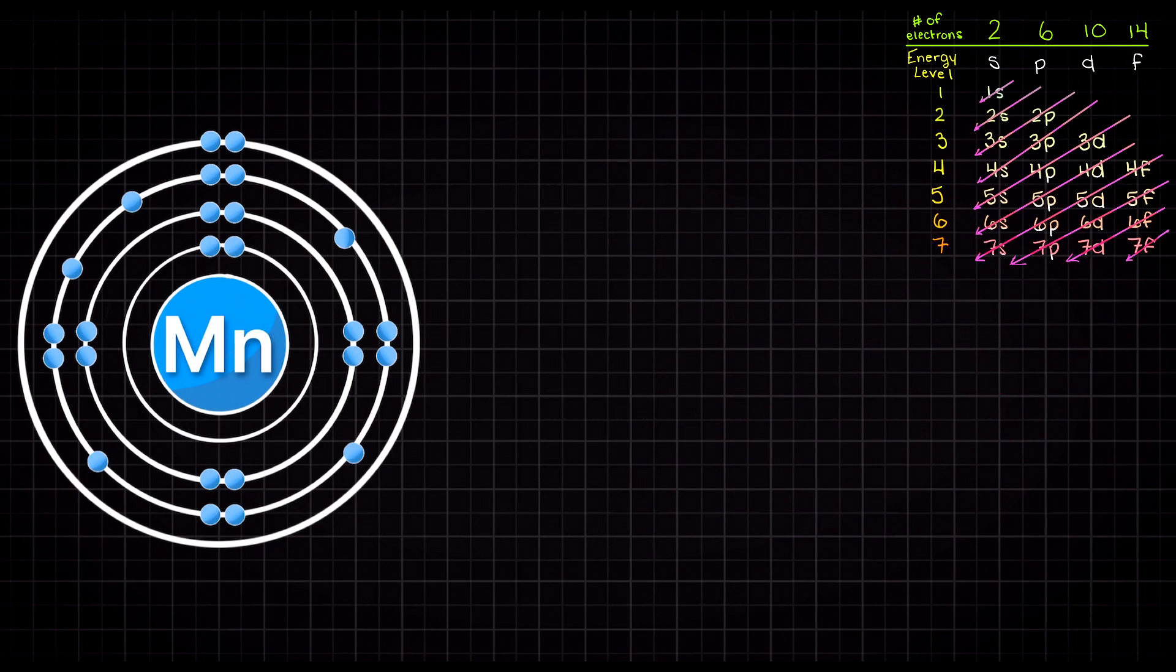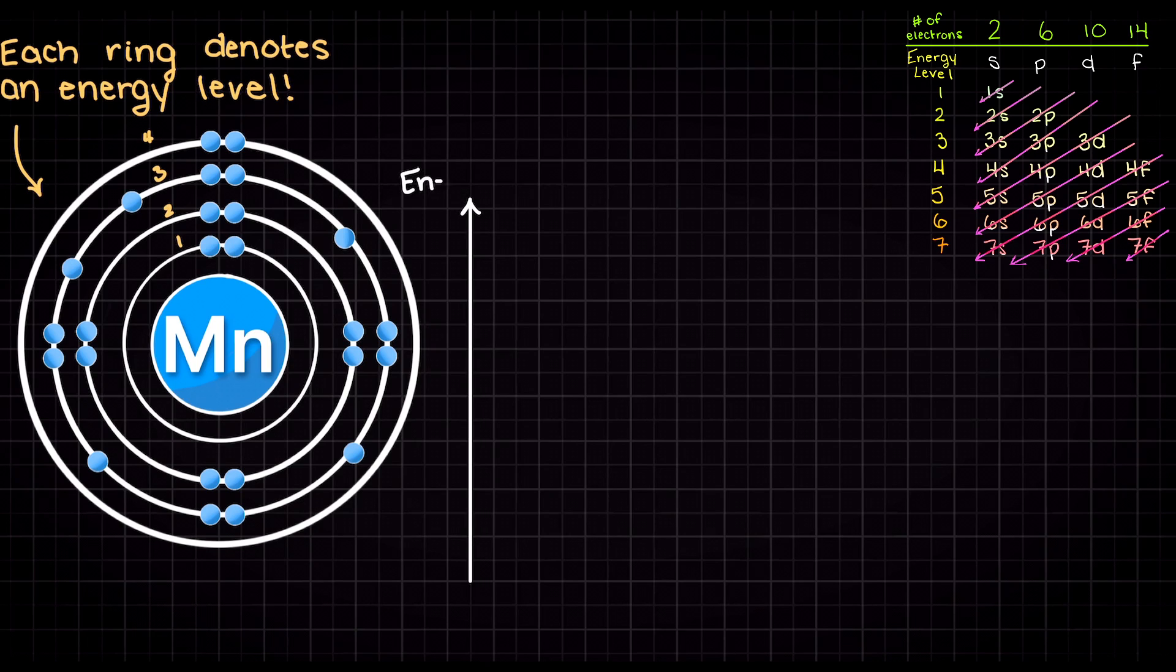Since we have 25 electrons to place, let's use this Bohr model of manganese to help keep track of all of our electrons. Recall that with the Bohr model each of these rings around our manganese center here denotes an energy level on our energy level diagram. So each row here is associated with a ring on our Bohr model. The farther we move away from the center, the higher energy level we are going to be at.